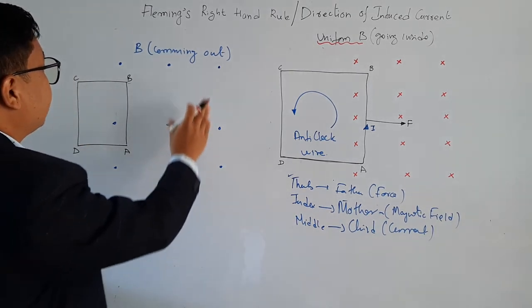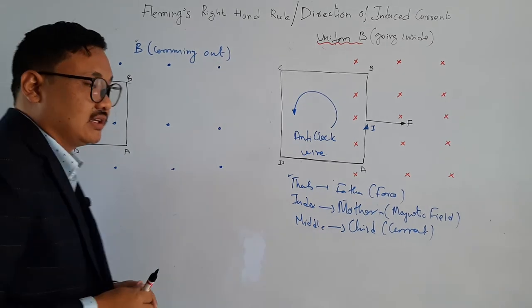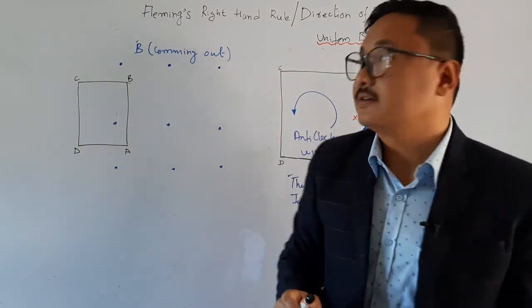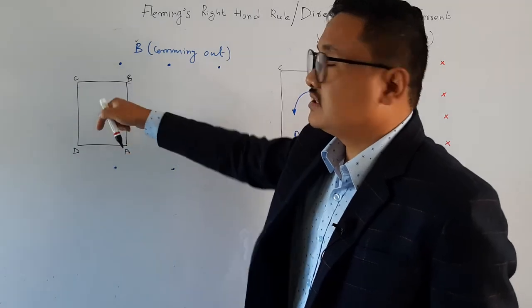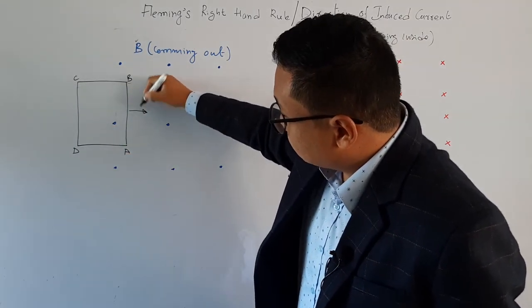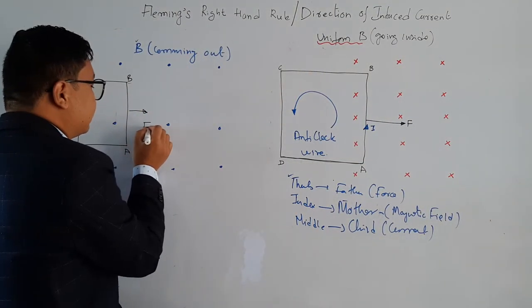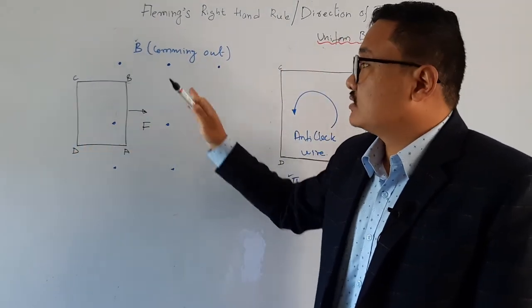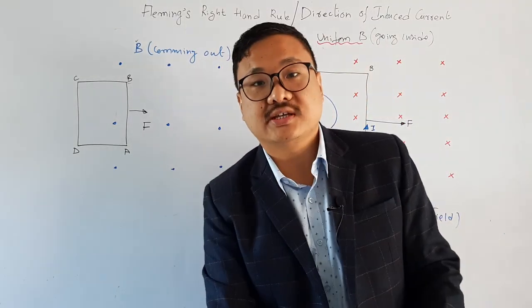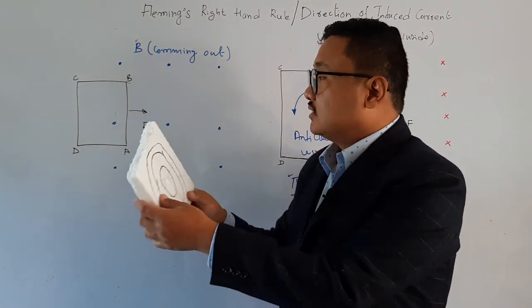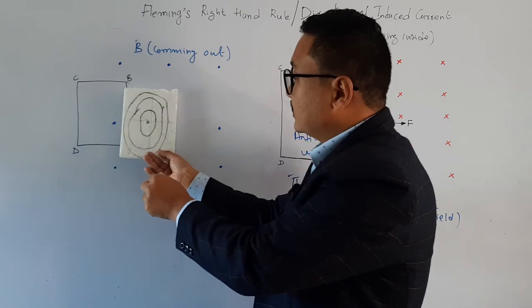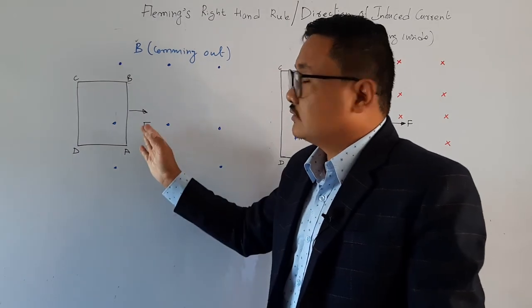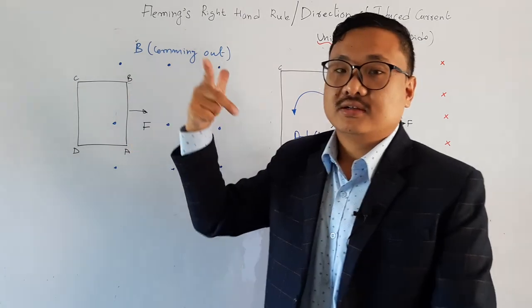In the second case, what we have considered is a magnetic field which is coming outside — represented by dots. Let us consider A, B, C, D as the coil, and the force is applied from left to right, same as before. Let us find the direction of induced current using Fleming's Right Hand Rule.